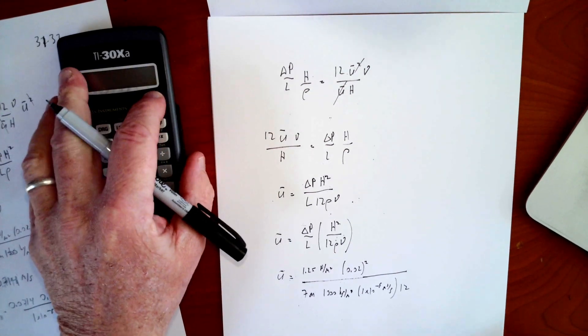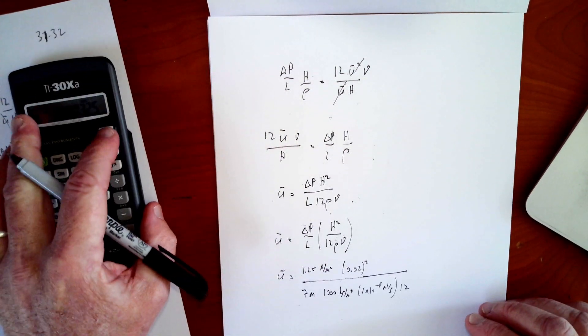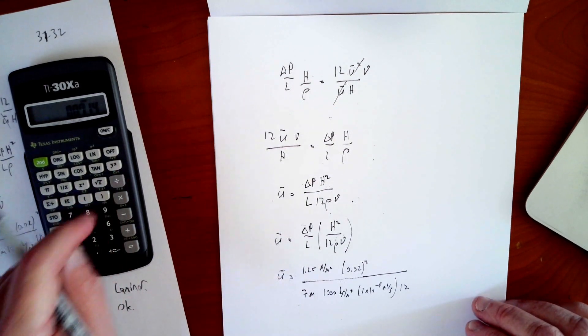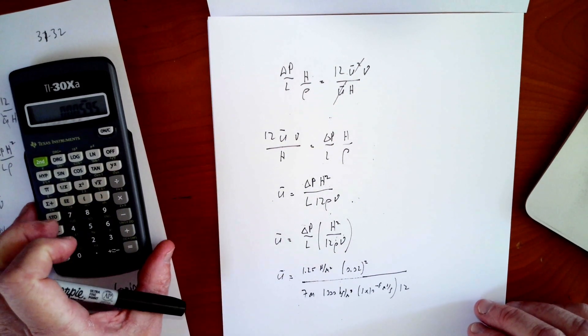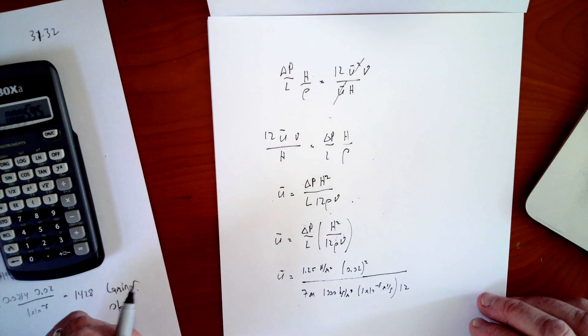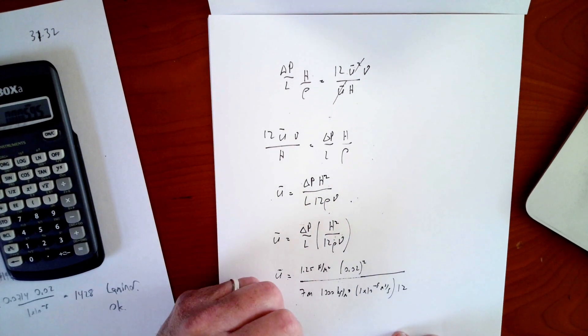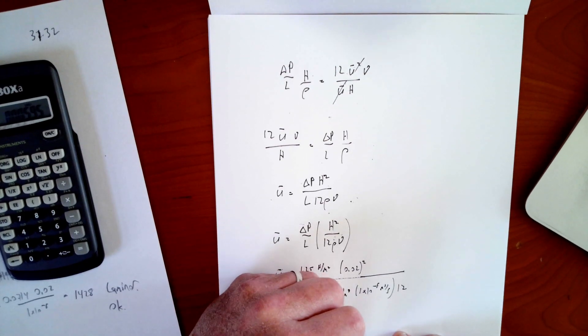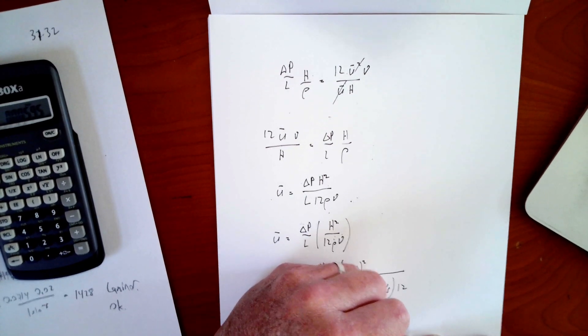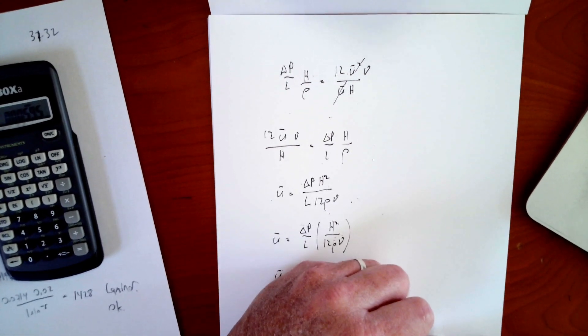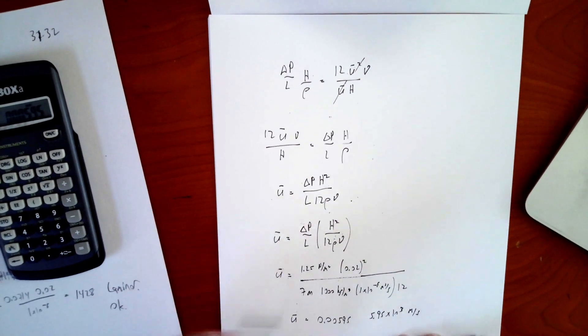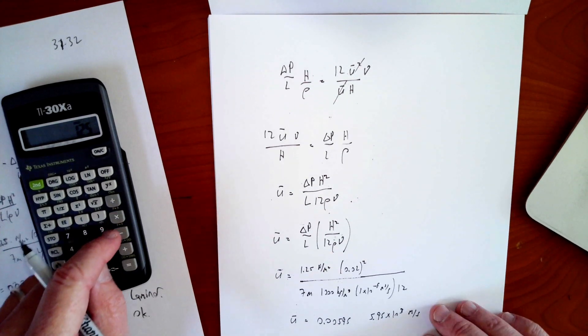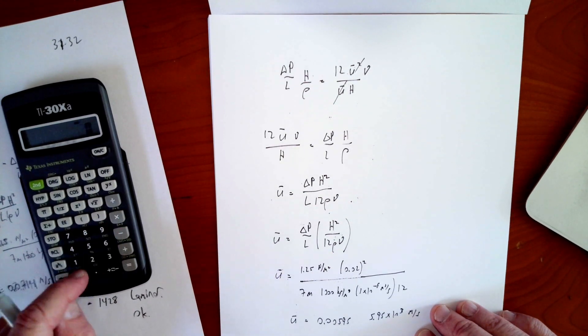So that's my whole thing. So I'm going to pull all that into my calculator. And it should be 0.00595 or 5.95 times 10 to the minus 3 meters per second, a nice slow velocity.